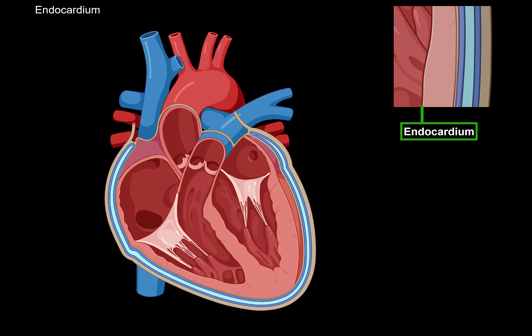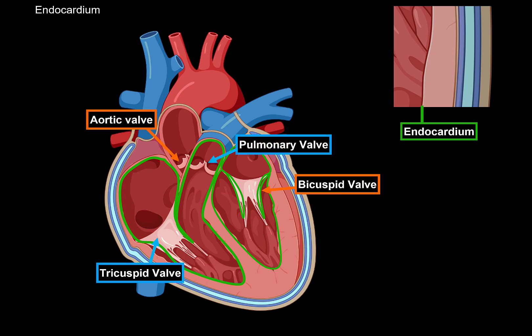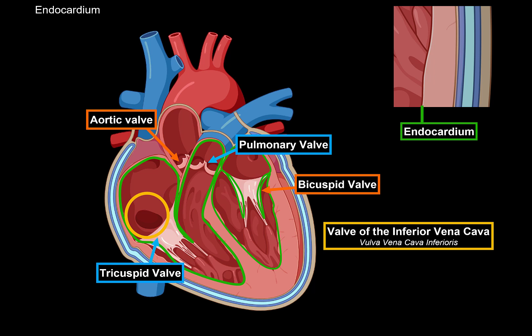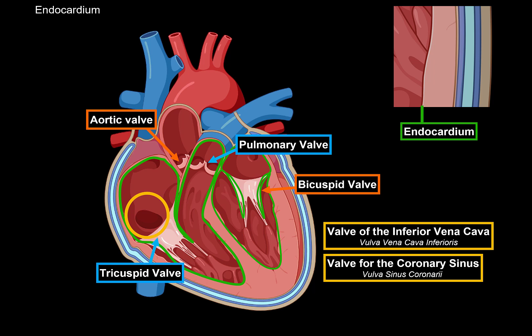The endocardium is lined by endothelium, just like the blood vessels, and it's the innermost layer of the heart, which means it's in direct contact with the blood. The endocardium lines the inner layer of the heart, but once it gets to the valve, it forms a double layer of endocardium, which I've shown here in the bicuspid valve. This double layer of the endocardium forms the actual cusps you see in all the valves of the heart — the bicuspid valve, tricuspid valve, pulmonary valve, aortic valve, as well as the valve of the inferior vena cava and the valve of the coronary sinus.